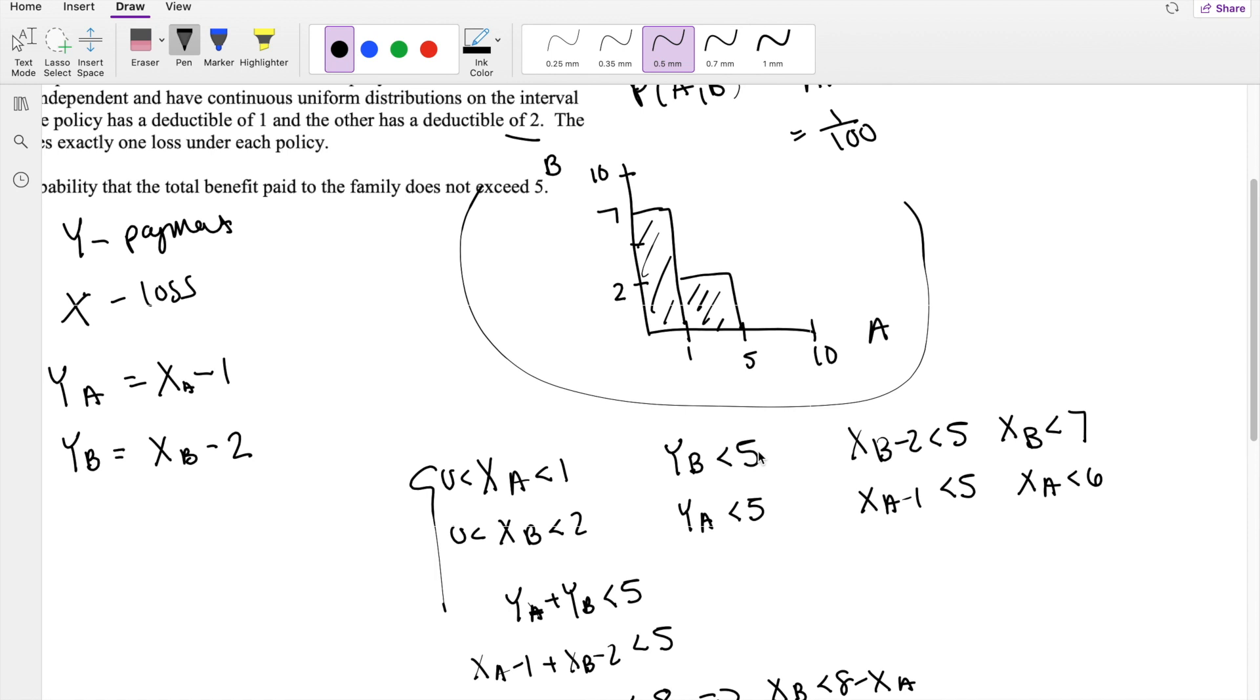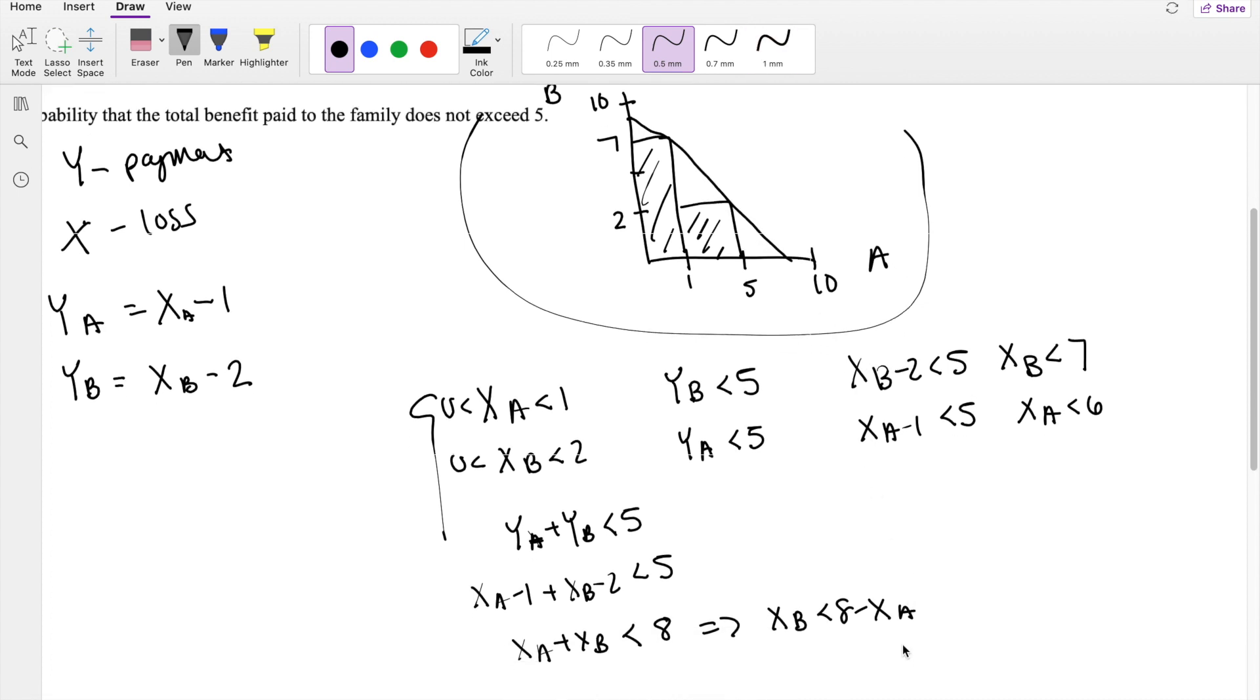So it's going to form this line from like, this graph is not drawn to scale, in case you didn't notice. But it's going to be like this line right here. And X_B is less than this number, so that must be like this area right here.